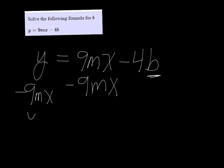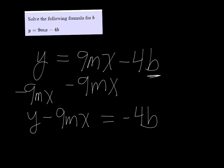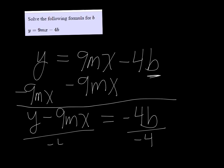So we get y minus 9mx is equal to negative 4b. Then we just have to divide both sides by negative 4. The negative 4s divide out and our answer is y minus 9mx divided by negative 4.